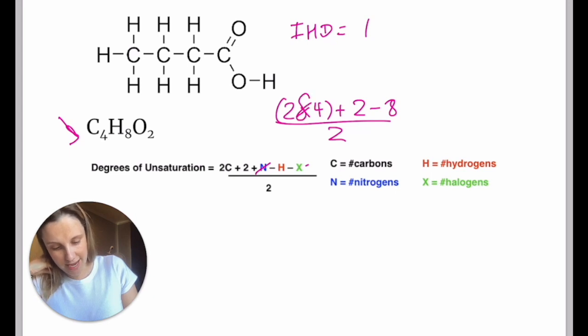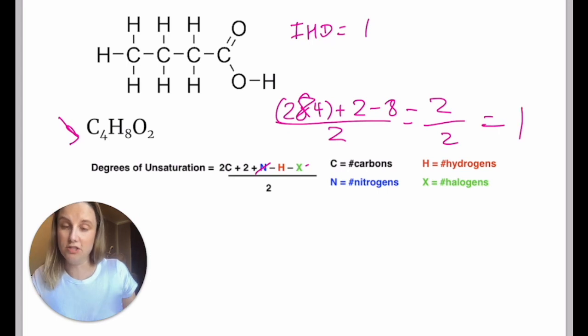So four times two is eight, plus two is ten, minus eight, this gives me two over two, which gives you one overall. So this is definitely giving me the same answer as from the structure.